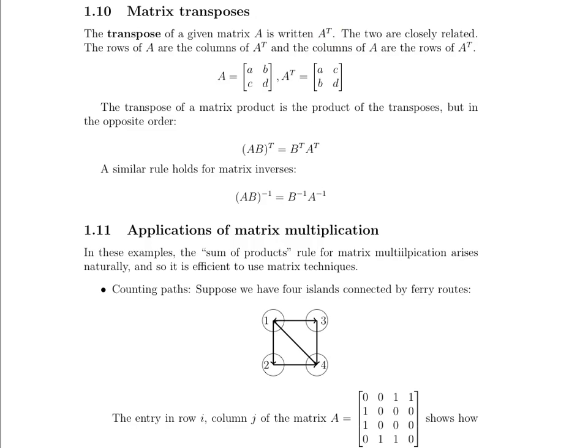Square matrices are not the only matrices that have transposes — non-square matrices can have transposes too, and they will have swapped dimensions. If it was a two by three matrix, it's now a three by two matrix, because the number of rows and columns are switching. Here's a square example: matrix A has entries A, B, C, D. The first row was A, B, and now in the transpose the first column is A, B. The second row was C, D, and now the second column in the transpose is C, D.